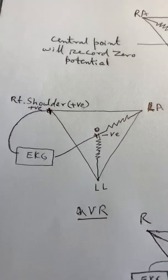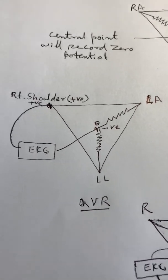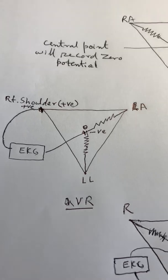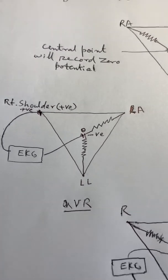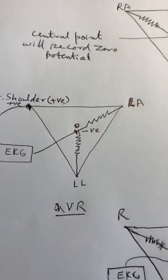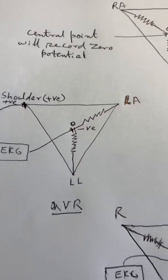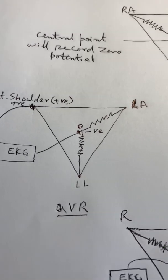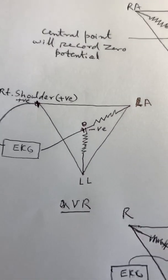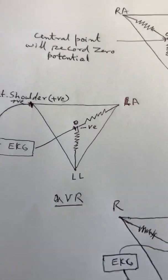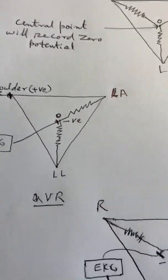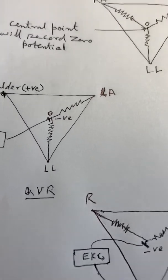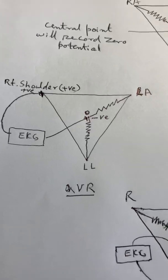When we say AVR, we mean we connect the ECG machine with the right shoulder, and the right shoulder is positive. The other electrode is connected to the center point, which is negative. So positive is on the right shoulder and negative is on the center point. It is called unipolar because the electrode connected to the center is recording zero — it acts as a reference electrode rather than a true bipolar electrode. That is why it is called AVR.